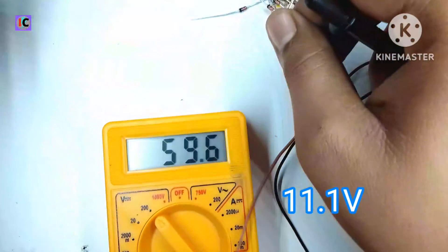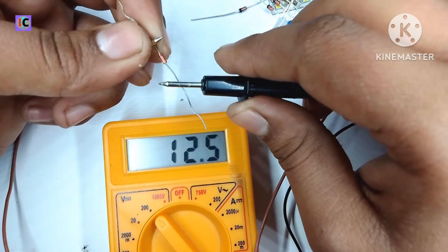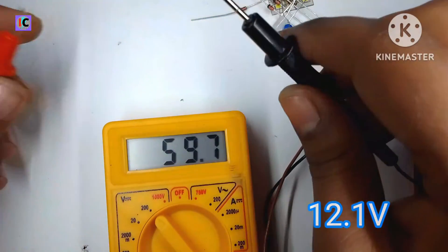As it is, it's an 11.1 volt Zener diode and after testing this, it's a 12.1 volt Zener diode.